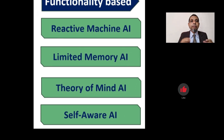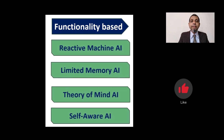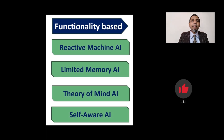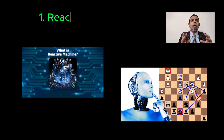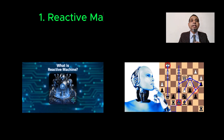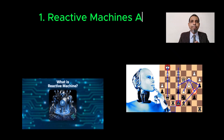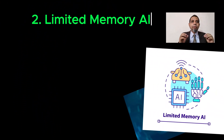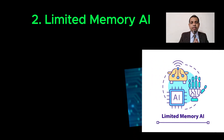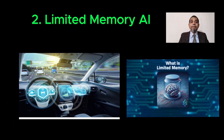On the basis of functionalities, there are four types. Number one, reactive machine AI — capable of responding to external stimuli in real time but unable to build memory or store information for future use; a chess-playing supercomputer is an example. Number two, limited memory AI — can store knowledge and use it to learn and train for future tasks; a self-driving car is an example of limited memory AI.